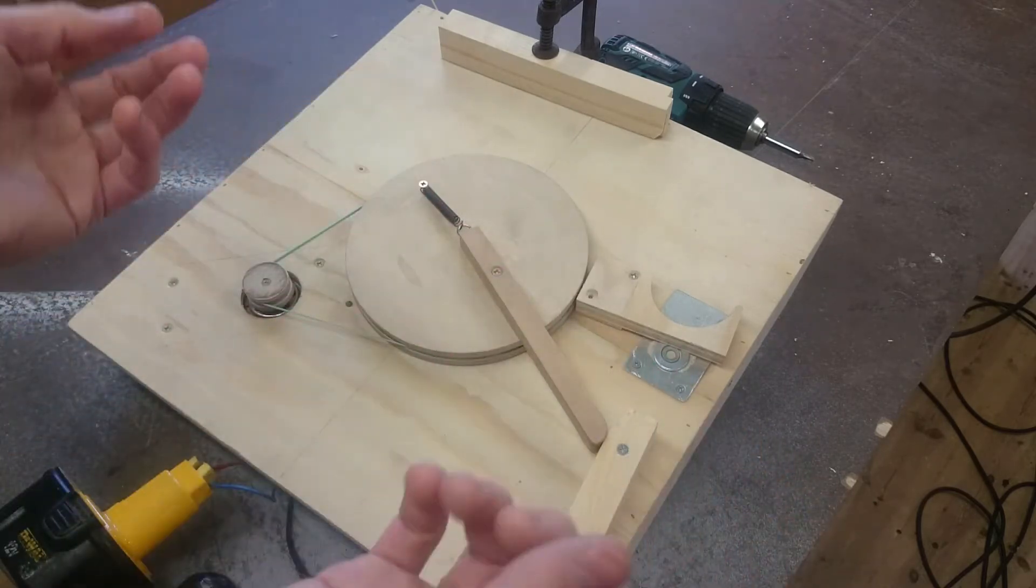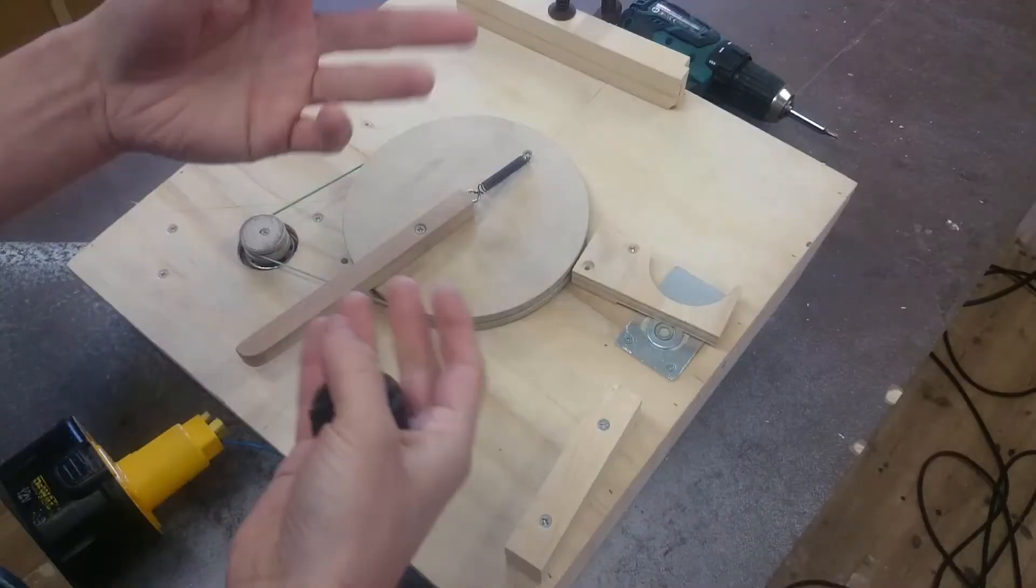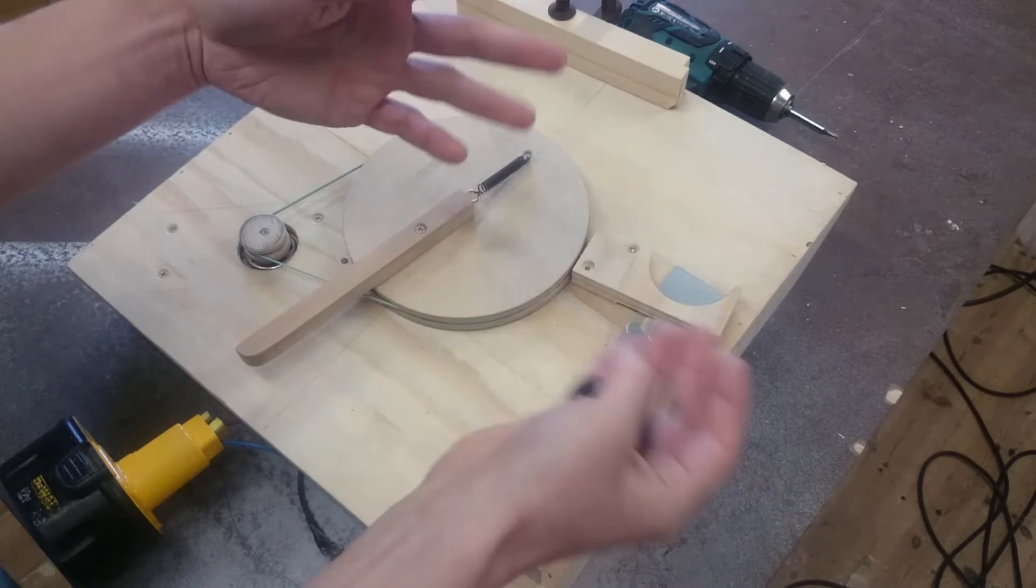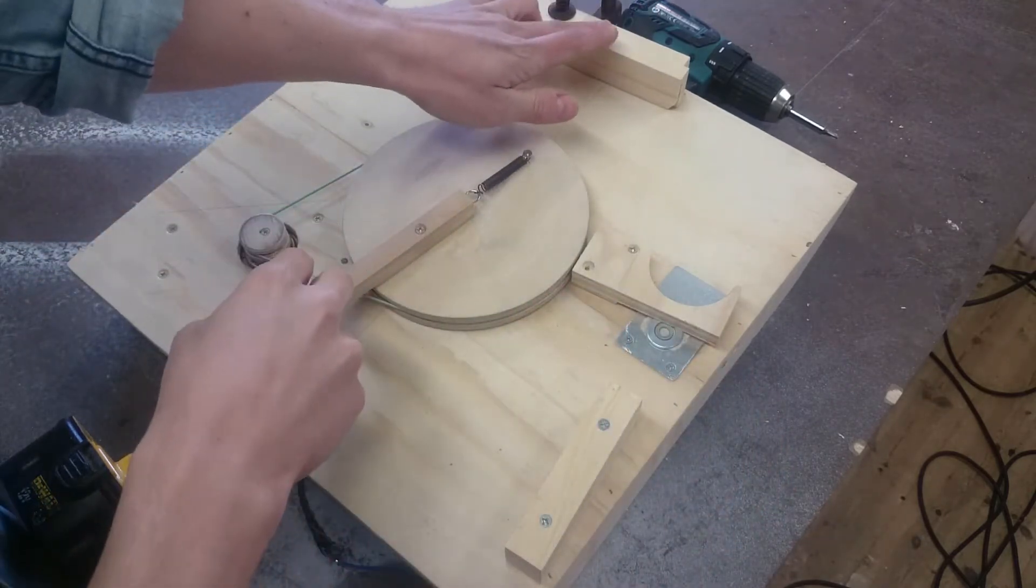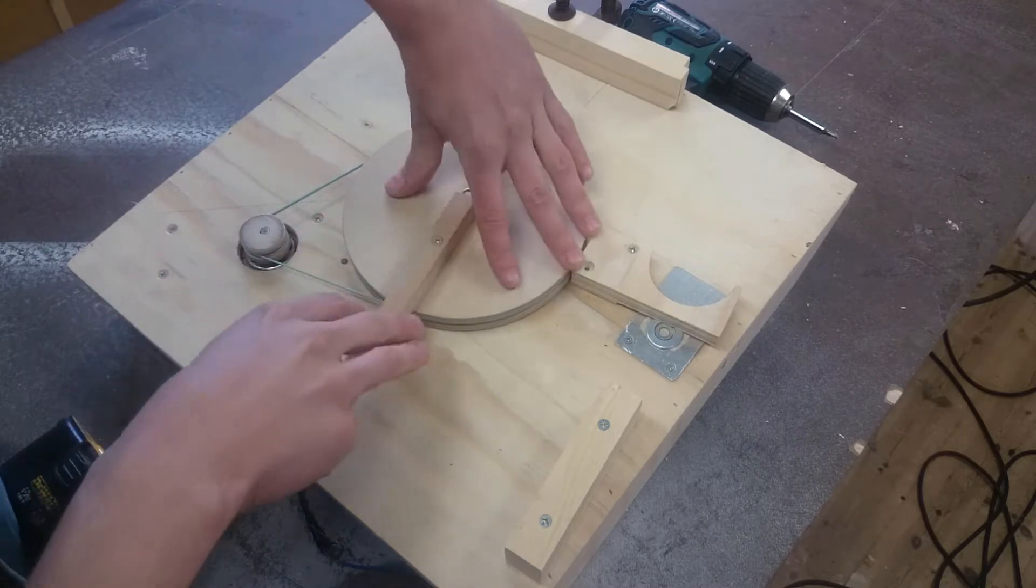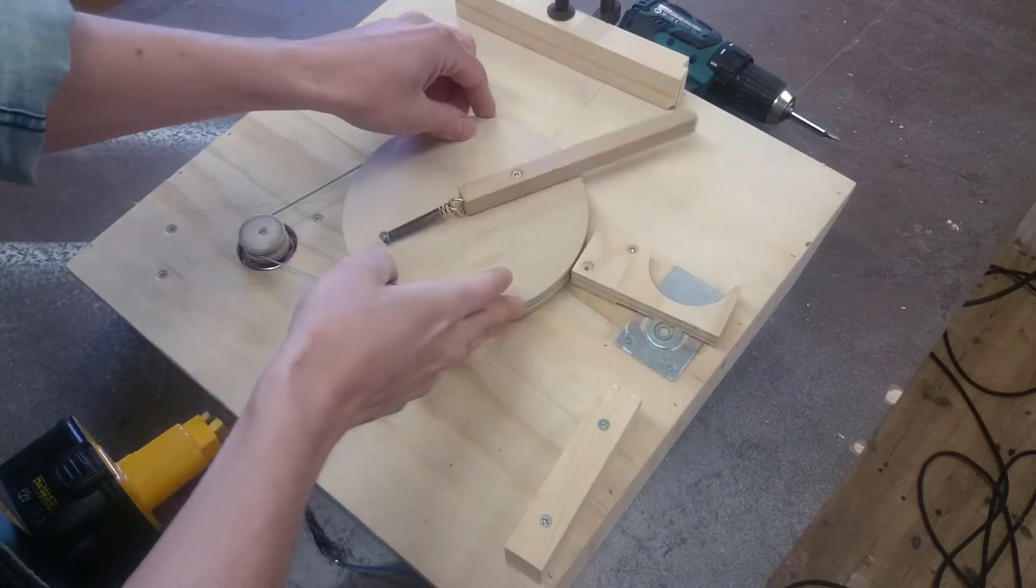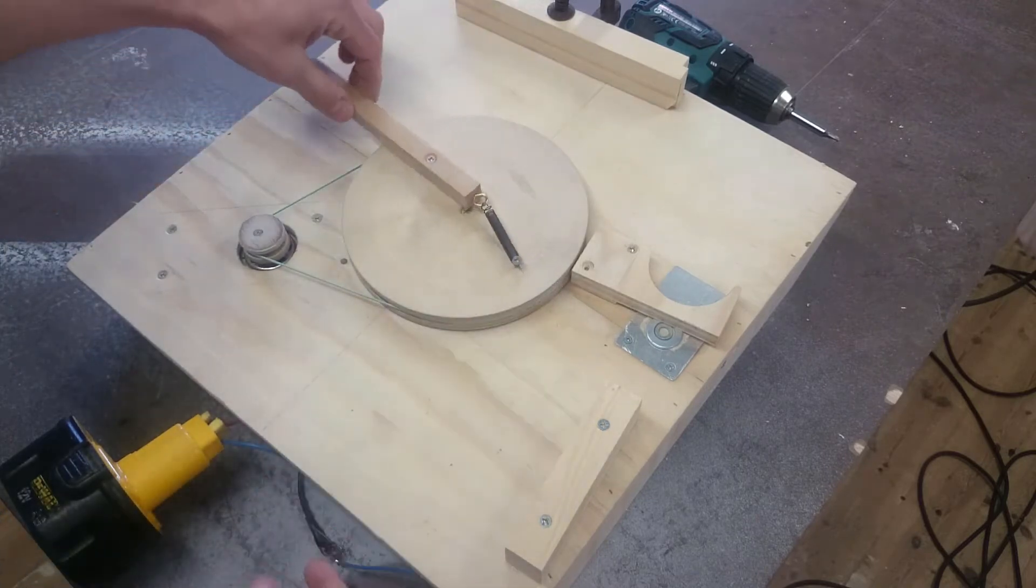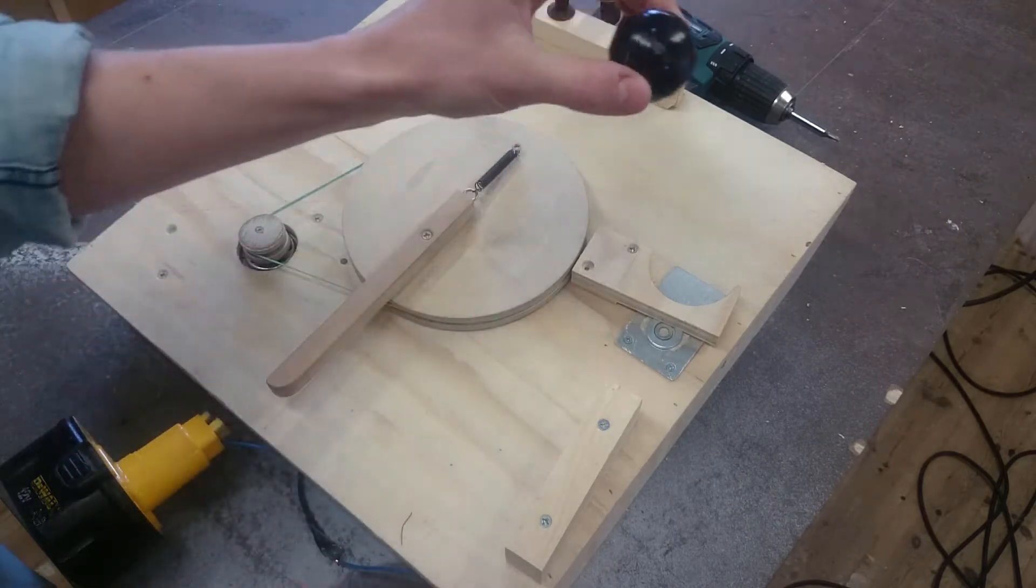So I started fiddling about with the placement of this and the weights, but nothing really worked until I put this block of wood right here. It just simply catches the arm and gives it some extra friction and makes it stop somewhere around here. So now I'm happy.